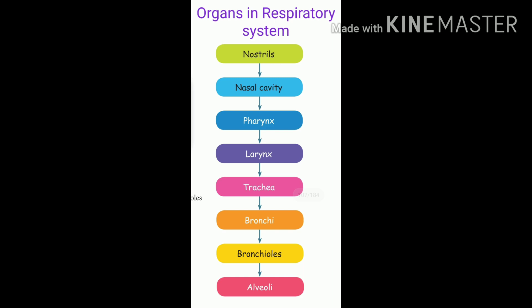These are the organs in your respiratory system. They are: nostrils, nasal cavity, pharynx, larynx, trachea, bronchi, bronchioles, and alveoli. I will read again, children. Listen: nostrils, nasal cavity, pharynx, larynx, trachea, bronchi, bronchioles, and alveoli.